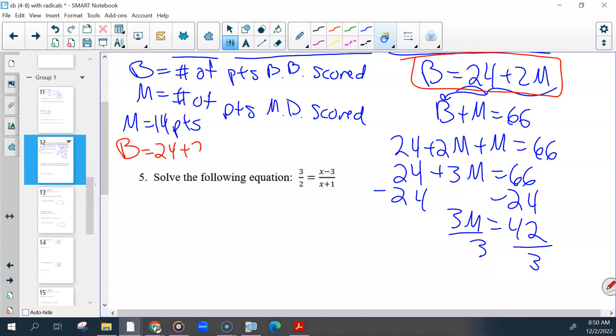So 3M equals 42, M equals 14. So the Miami Dolphins scored 14 points. Then we have to go back and find Buffalo Bills by putting this number back into this equation: 24 plus 2 times 14.